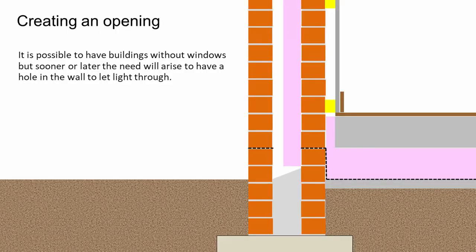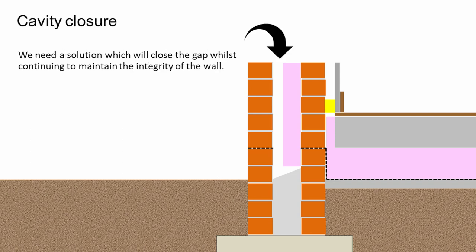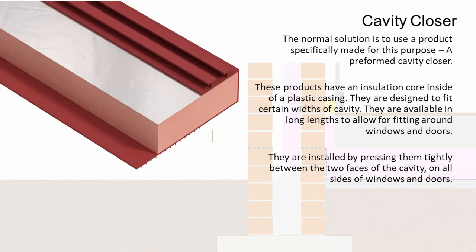It would be very rare for a building to have a wall without any windows, and sooner or later we're going to be faced with a design problem of how we deal with a cavity when we want to make a hole in the wall. This creates a problem of what to do with that open cavity and how we fill it. We need to find a solution which is going to close that gap whilst continuing to maintain the integrity of that wall. The normal solution is to use a product specifically made for this purpose: a preformed cavity closer.